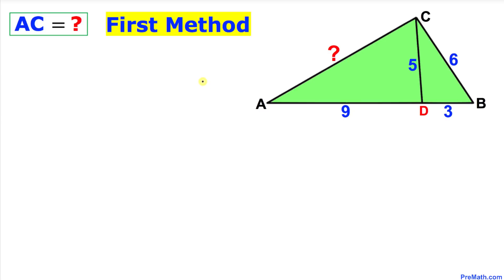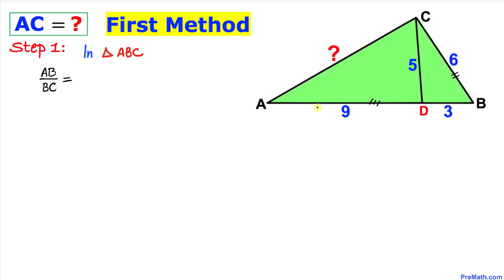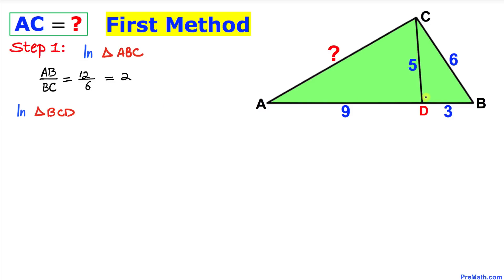Here is our very first method. Let's focus on triangle ABC and the side length AB and BC. We are going to look at the ratio AB divided by BC. We know that AB is 3 plus 9, which is 12, divided by BC which is 6. If we divide them we get 2.